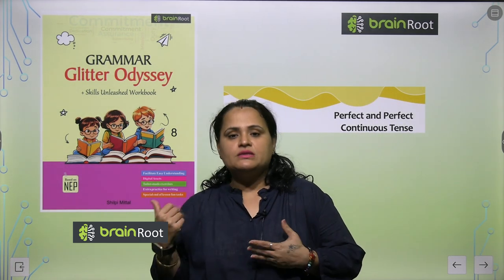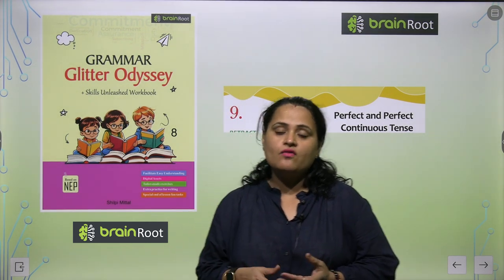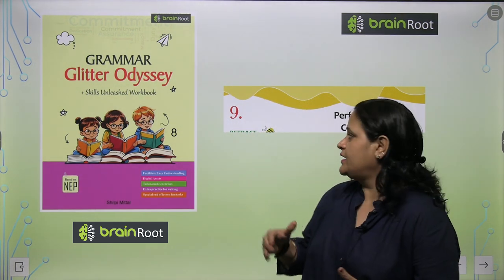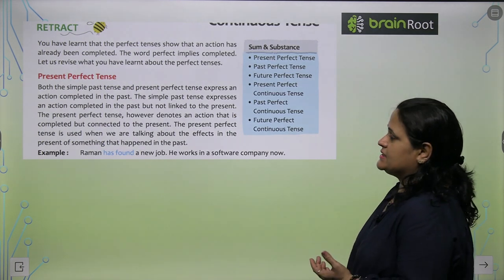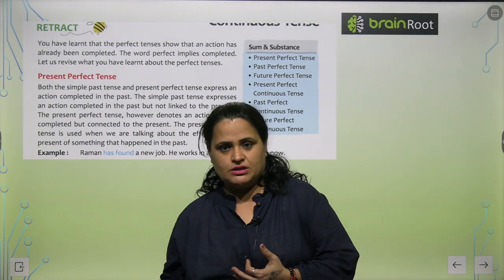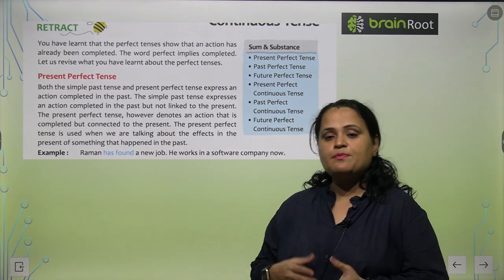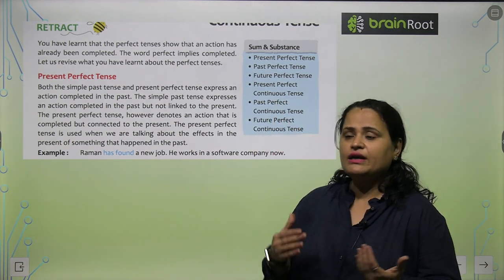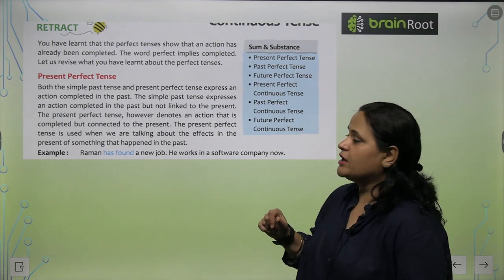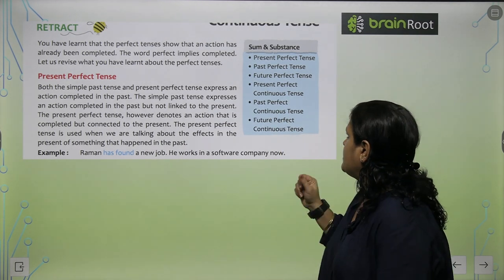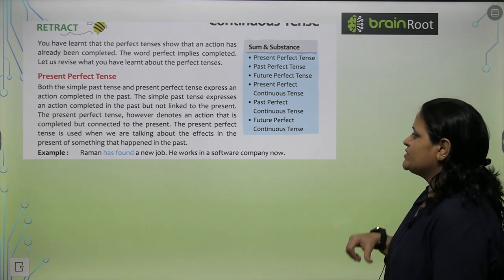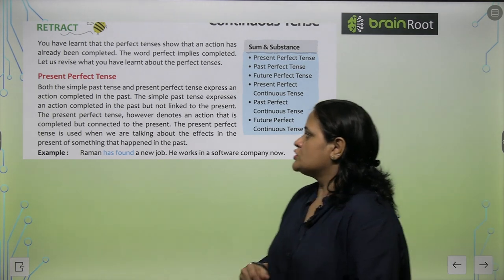Before this we did simple tenses — past, present and future tense. Then we did continuous tenses: present continuous, past continuous and future continuous. Now we are taking perfect and perfect continuous tense. You have learnt that the perfect tenses show that an action has already been completed — koi kaam pehle ho chuka hai, pehle hi khatam ho chuka hai. The word 'perfect' implies 'completed'.